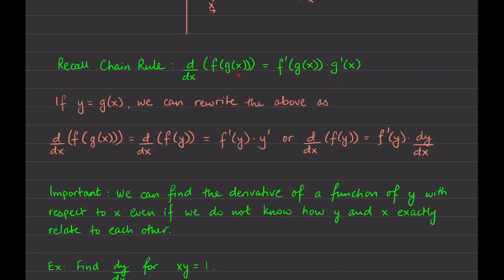Now we're going to do something clever. We're going to let this g of x function be y. If we replace g of x with y, we can rewrite the chain rule as follows: if we were trying to find the derivative of this function with respect to x, that's really just saying find the derivative of f of y, because g of x is getting replaced with y. Then we apply the same chain rule: find the derivative of the outside function keeping the inside the same, times the derivative of the inside function.